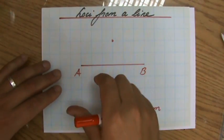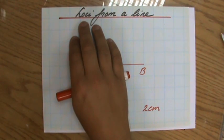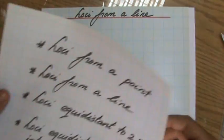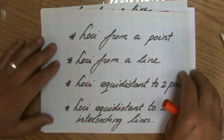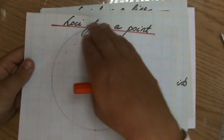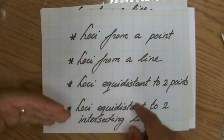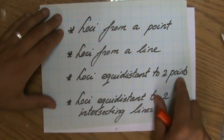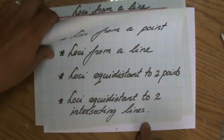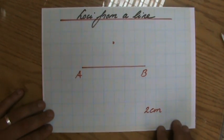Welcome to this video about the loci from a line. Loci, as I've explained in my previous videos, are all the points fitting a particular description. We have four types: the loci from a point, which uses a compass to construct all those fitting points, the loci from a line, and two more — the loci equidistant to two points and the loci equidistant to two intersecting lines. Check my site explainingmaps.com where you'll find all those resources nicely organized.